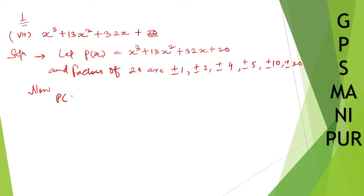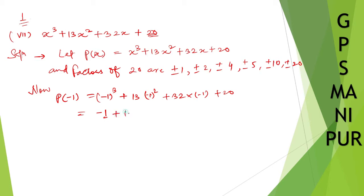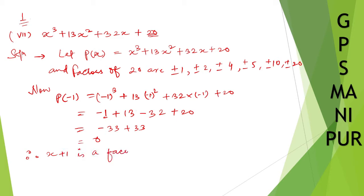Let us start from minus 1, because I can see that it will cancel with minus 1. So, p of minus 1: minus 1 whole cube plus 13 into minus 1 whole square plus 32 into minus 1 plus 20. So, minus 1 plus 13 minus 32 plus 20. Minus 1 minus 32 is minus 33, and 20 plus 13 is 33. So it is 0. Therefore, x plus 1 is a factor of p of x.